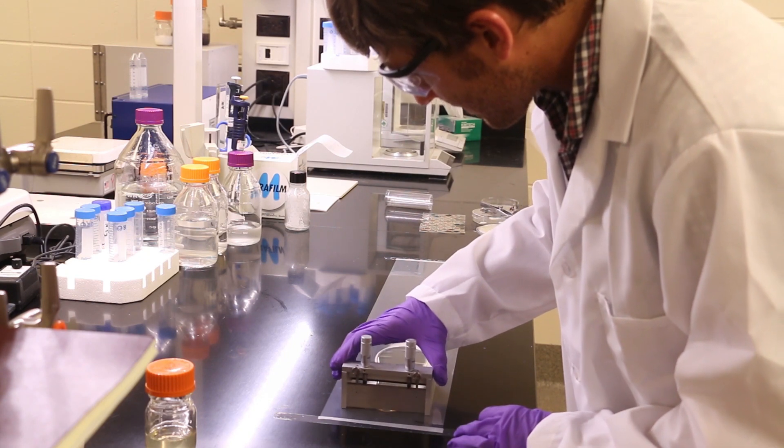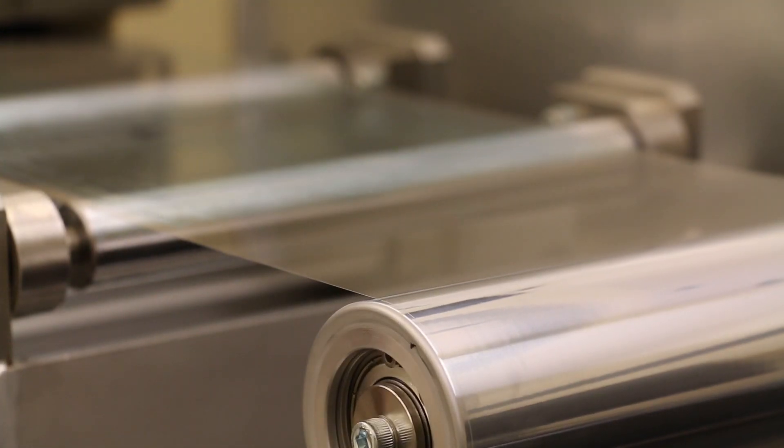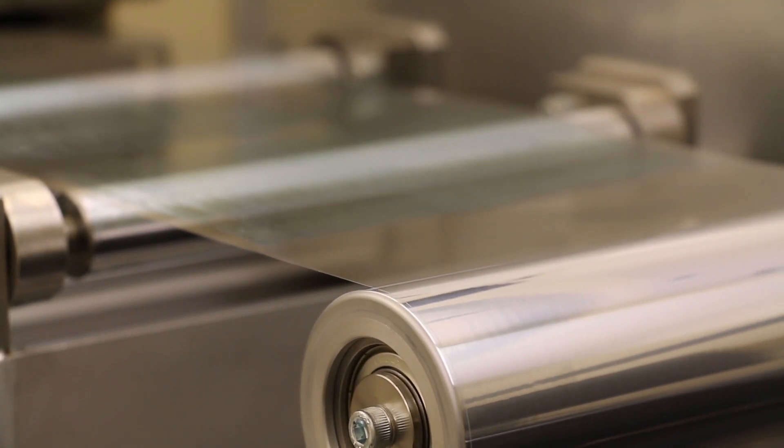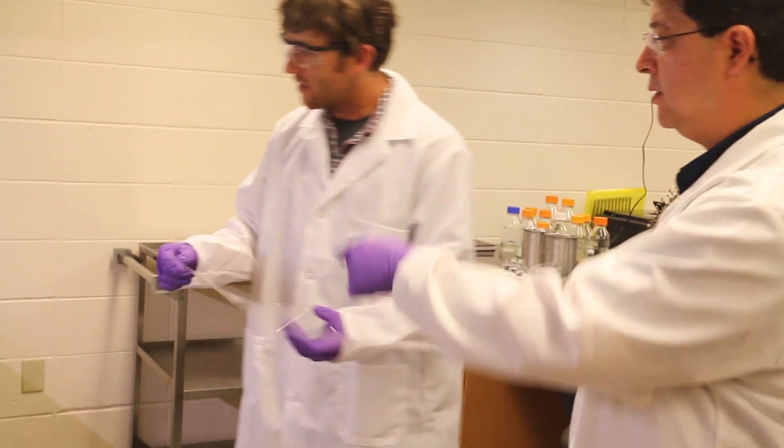We then move on to a film caster and cast on a substrate, which can then be directly transferred to small-scale manufacturing. The final film can then be cut into the final dosage form, depending on whether it's for pediatrics or adults.